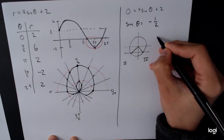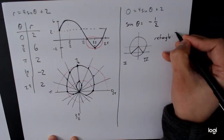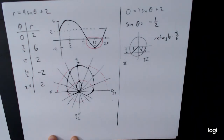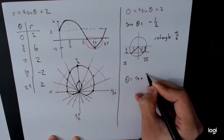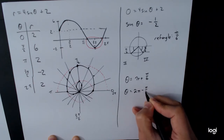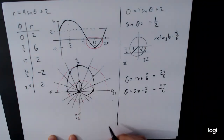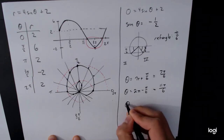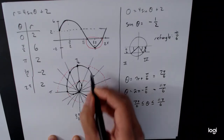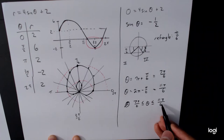So the two solutions are theta equals pi plus pi over 6 for when we first go into the inner loop, and theta equals 2 pi minus pi over 6 for when we come out. That gives us 7 pi over 6 and 11 pi over 6. So this inner loop corresponds to the angles 7 pi over 6 is less than or equal to theta less than or equal to 11 pi over 6.